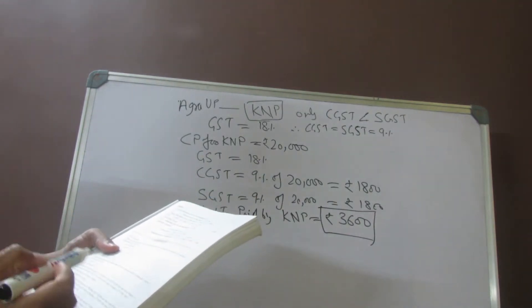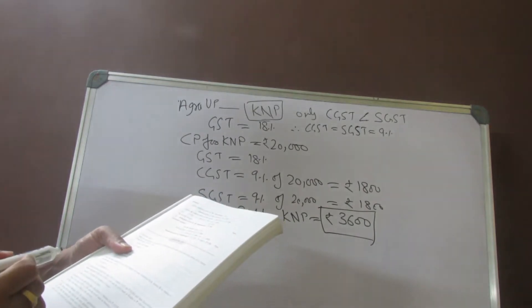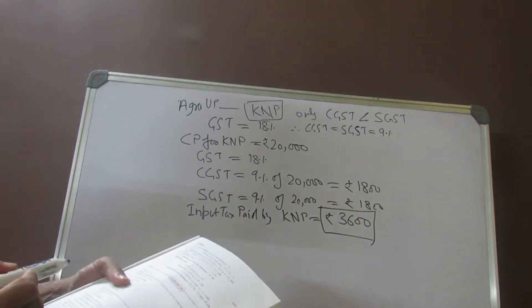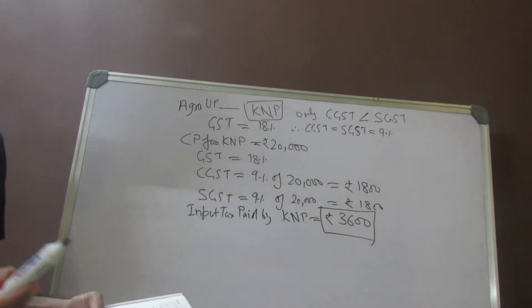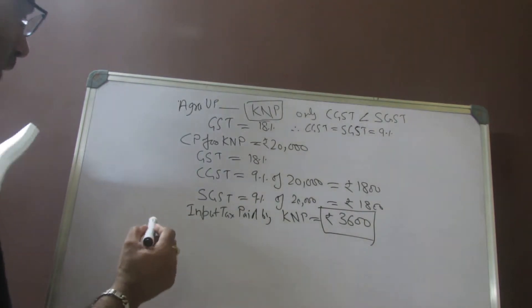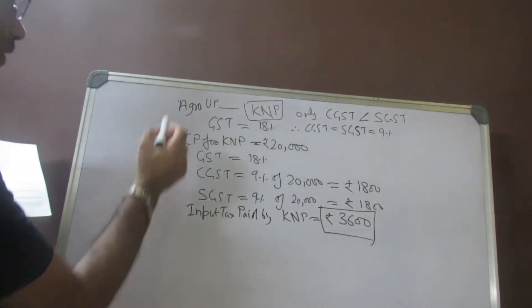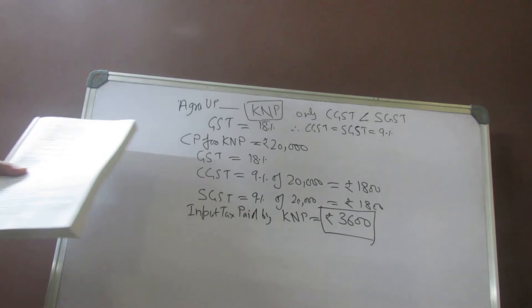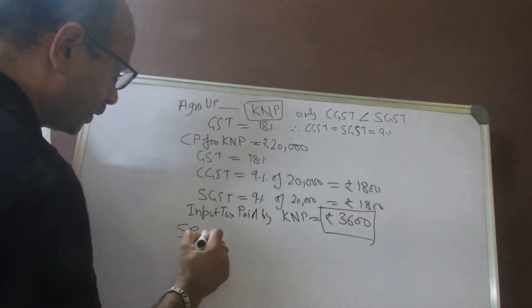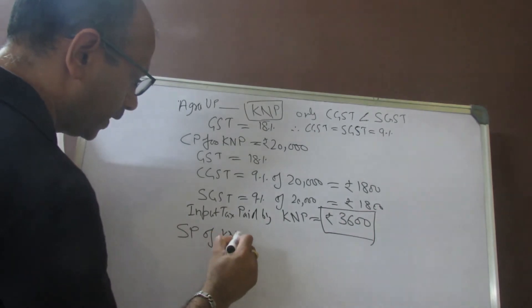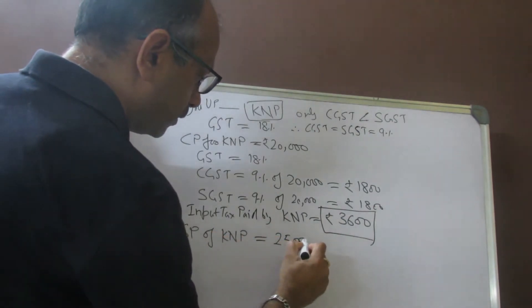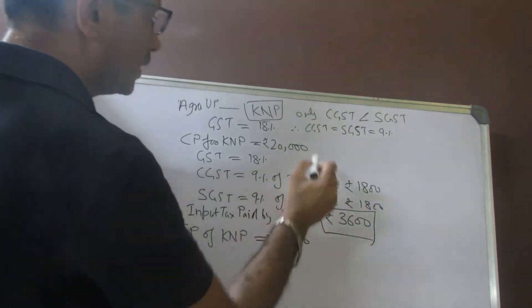Now let us go to the second part. When the dealer in Kanpur sells the goods or service to a dealer in Jaipur, the state has changed, so obviously only IGST would be paid. The profit which the Kanpur dealer is making is 5,000 rupees. That means SP of Kanpur dealer is 25,000 rupees. His cost price was 20,000, so I'm adding 5,000 profit.